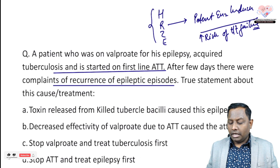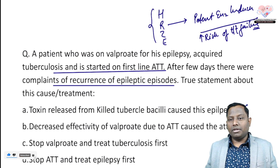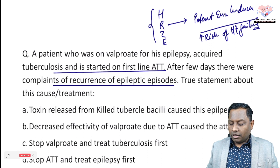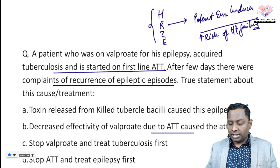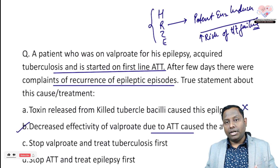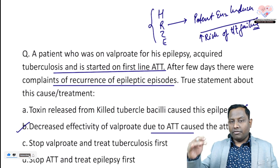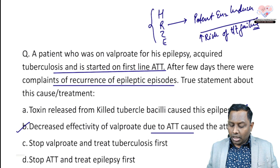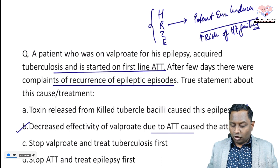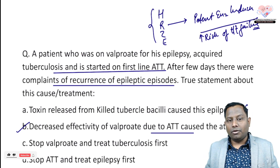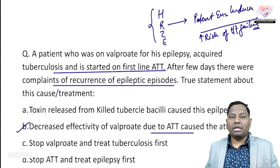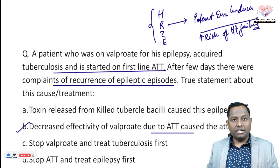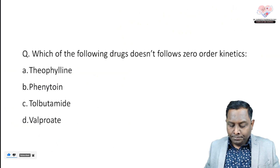So option B — decreased effectivity of valproate due to ATT — is the cause of the attack. Rifampicin in the first-line ATT must have induced the metabolism, increased clearance, and reduced the overall effect of the anti-epileptic drug. Options C and D — stopping valproate or stopping ATT — are not followed. Stopping drug therapy is not considered; dose alteration can be considered. B is the correct answer.